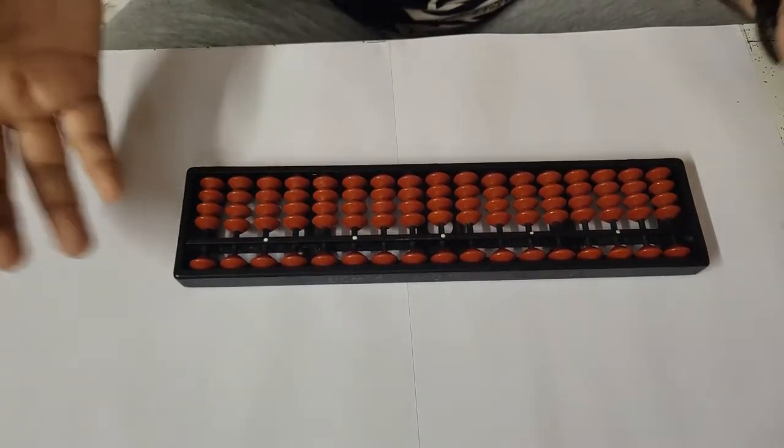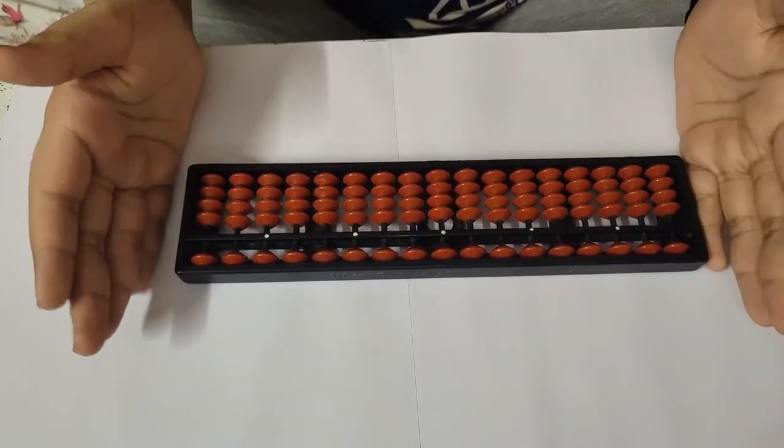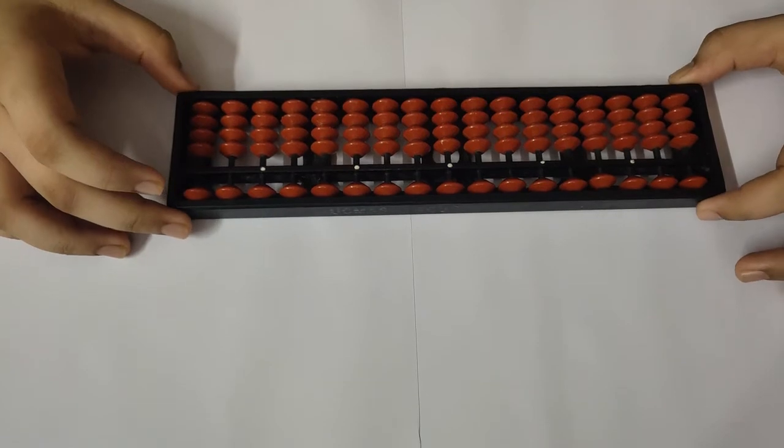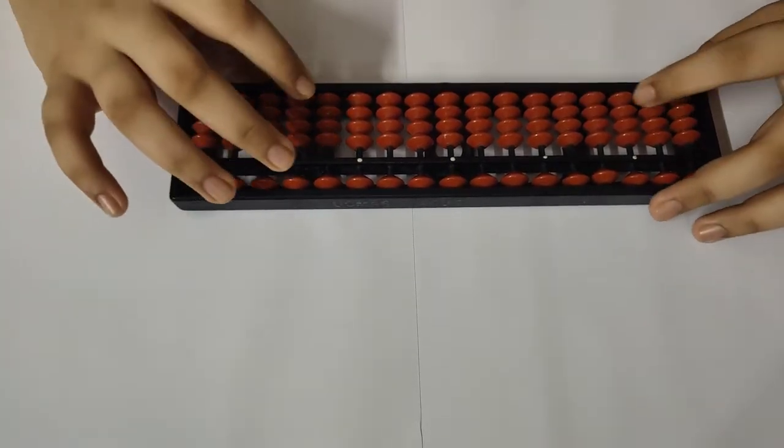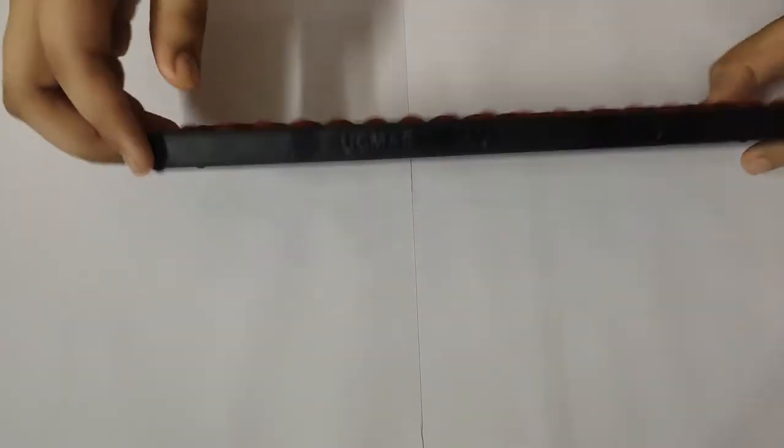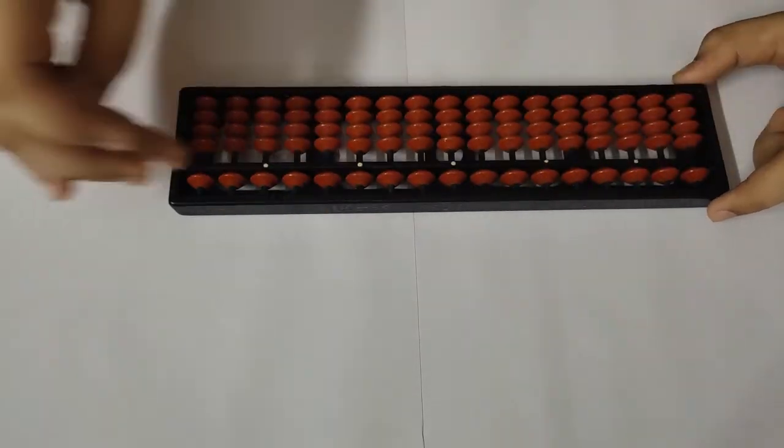So this is an abacus which we will be learning how to use. This is a normal abacus. First we will learn how to set the abacus. When your abacus is fully messed up, just pull it up, put it down again, and all the beads of the upper layer will be down.